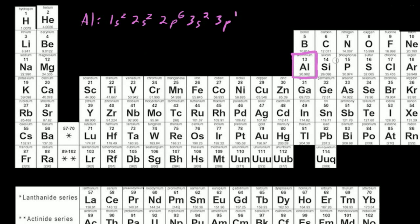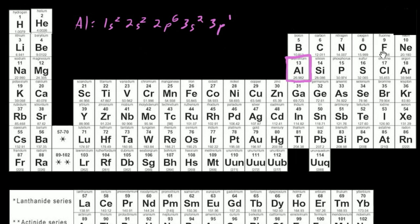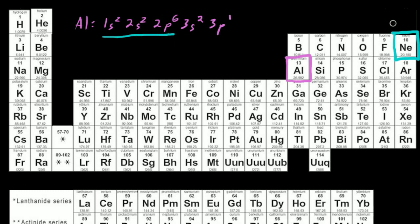Essentially, this notation is a way of saving space for how we write electron configurations. If we take the first three entries — 1s2, 2s2, 2p6 — isn't that the same exact electron configuration for neon? It has 10 electrons, and that's how many electrons neon has. So couldn't we say that aluminum has the same electron configuration as neon, but with just a couple of extra things added on?